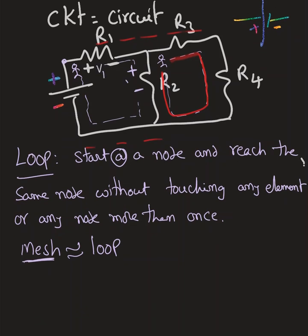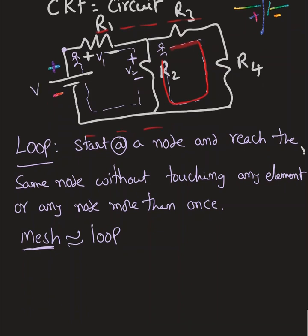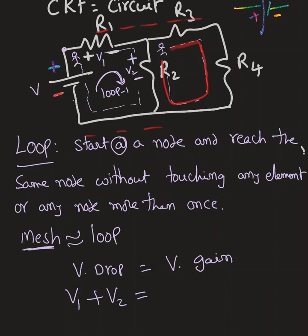Let me label these as V1 and V2, and call this Loop 1. This arrow indicates the direction I'm walking. In Loop 1: if you're entering a positive sign, take that as a voltage drop; if you're entering a negative sign, take that as a voltage gain. So V drop equals V gain. V1 is a voltage drop, V2 is also a voltage drop, and since I'm entering the negative terminal of the battery, that must be the voltage gain. So V1 plus V2 equals V — this is the KVL equation.